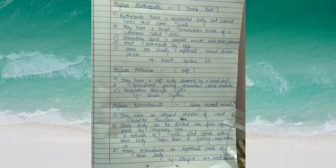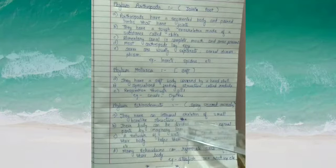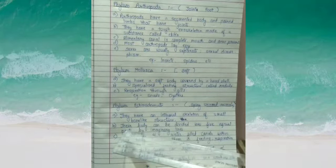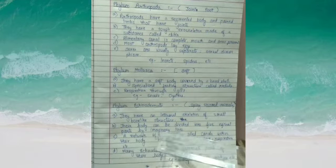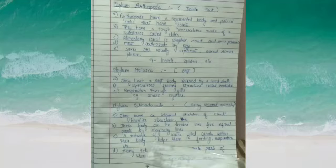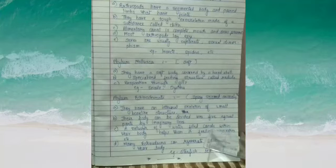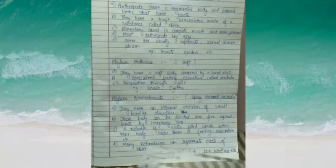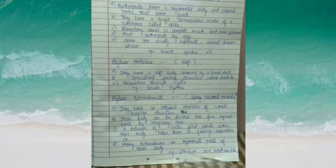The final phylum is Echinodermata, meaning 'spiny-skinned animals,' such as the starfish. They have an internal skeleton of small bone-like structures — not true bone, but a similar structure. The body can be divided into five equal parts by imaginary lines. A network of water-filled canals — the water canal system — is a main basic feature of this phylum, helping with feeding, respiration, and more. Many echinoderms can regenerate parts of their body. Examples include starfish and sea urchin.